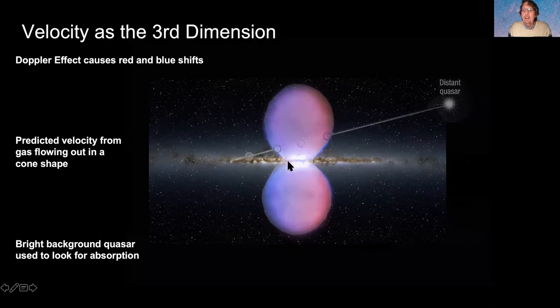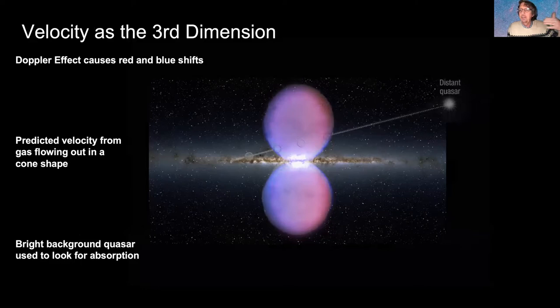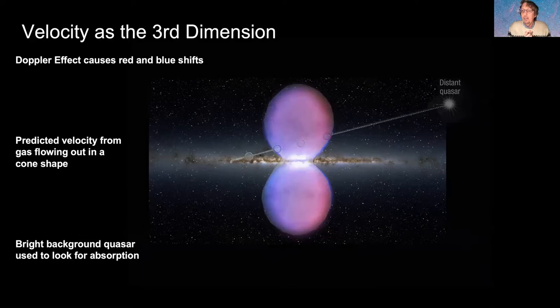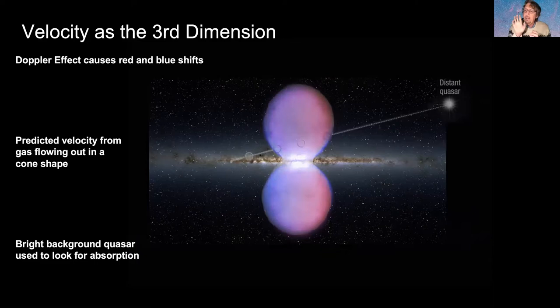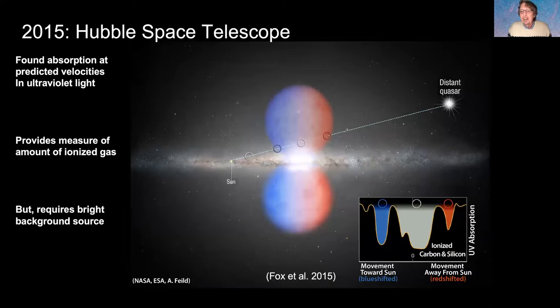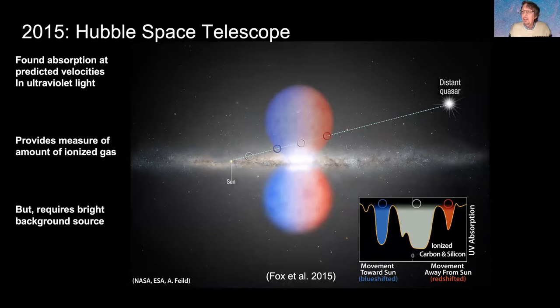We pointed WHAM in a direction where we could see ionized gas — not in emission but in absorption. The light from distant quasars passes through the Fermi Bubble on the way to us and shows absorption lines — work done by former UW-Madison grad Andy Fox. We then pointed WHAM to see if we could detect the H-alpha emission associated with that absorption, and we did. We've made the very first optical emission line observations of gas coming out of what we believe is a giant outflow from the center of the Milky Way.